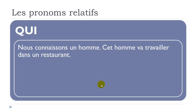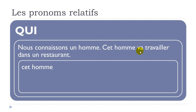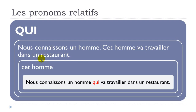Let's see a third example: nous connaissons un homme, cet homme va travailler dans un restaurant. Here we have futur proche — va, it's aller. We don't want to repeat cet homme, so we get: nous connaissons un homme qui va travailler dans un restaurant. Qui goes just before the verbs.